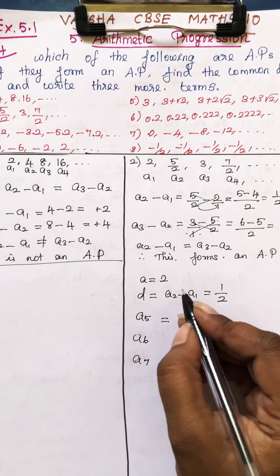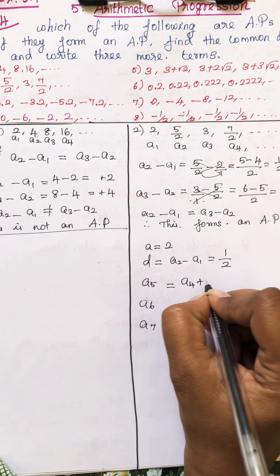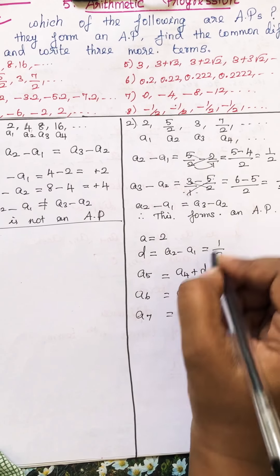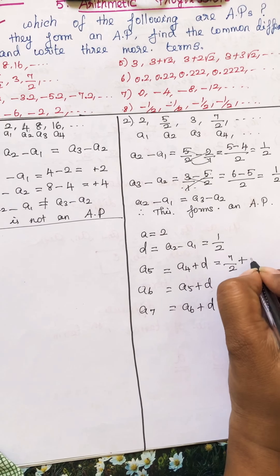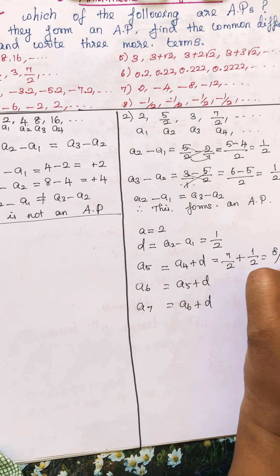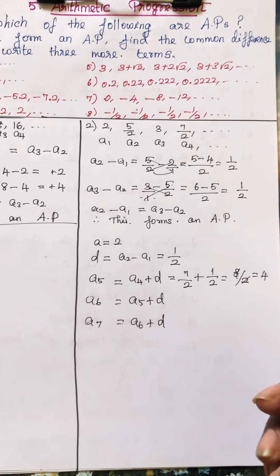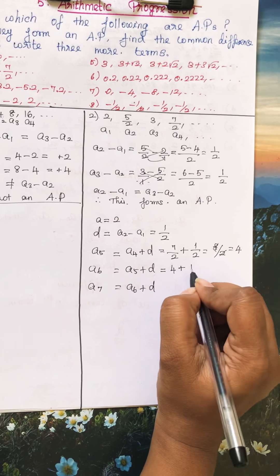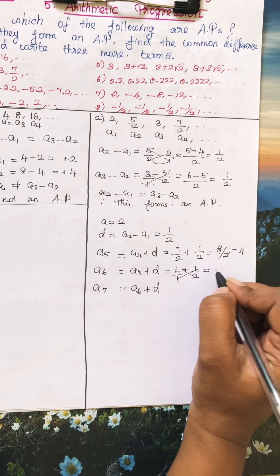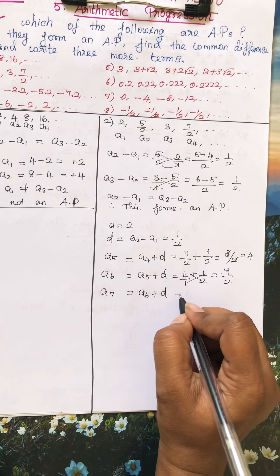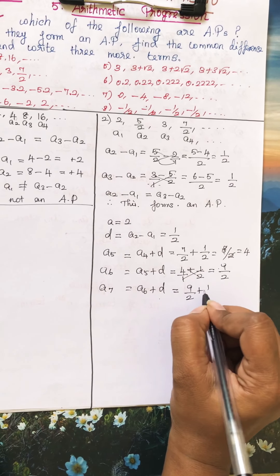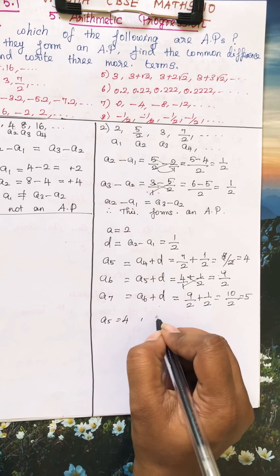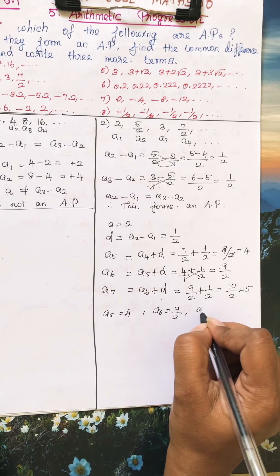To find A5: A5 equals A4 plus D. A6 equals A5 plus D. A7 equals A6 plus D. A4 is given as 7/2, plus D which is 1/2, gives 8/2, which cancels to 4. So A5 is 4. Then A6 is 4 plus 1/2: cross multiply to get 9/2. Then A7 is 9/2 plus 1/2 equals 10/2, so you get 5.